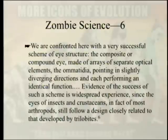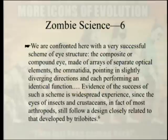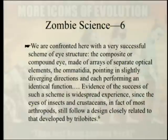Levi-Setti continues: 'We are confronted here with a very successful scheme of eye structure — the composite or compound eye, made of arrays of separate optical elements, the ommatidia, pointing in slightly diverging directions, each performing an identical function. Evidence of the success of such a scheme is widespread, since the eyes of insects and crustaceans — in fact, of most arthropods — still follow a design closely related to that developed by trilobites.'